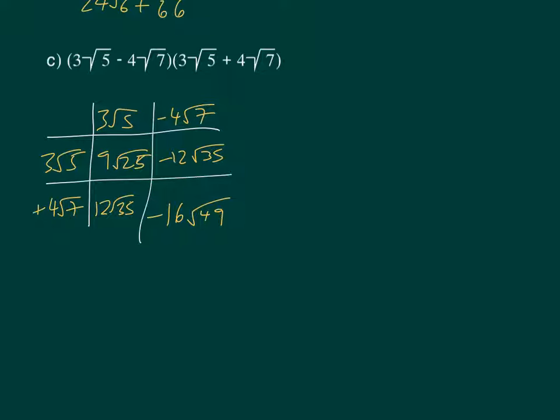Then we need to simplify each one. So the top left one, 9 root 25, is going to be 9 times 5, which is 45. These two are going to cancel. Minus 12 root 35 and 12 root 35, when we add them, we'll equal 0. And then we need to take away 16 times root 49, which is 16 times 7, which is 112. So 45 minus 112, which is going to give us a final answer of minus 67.